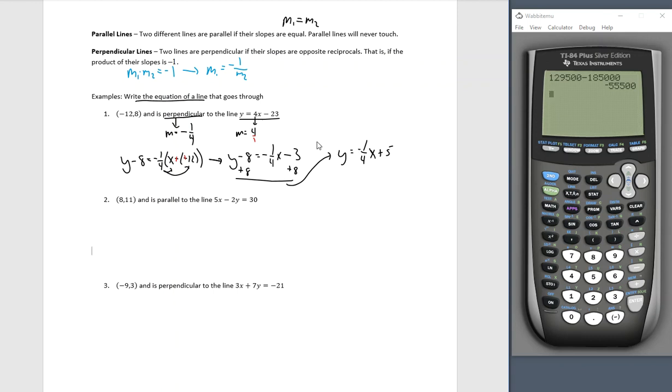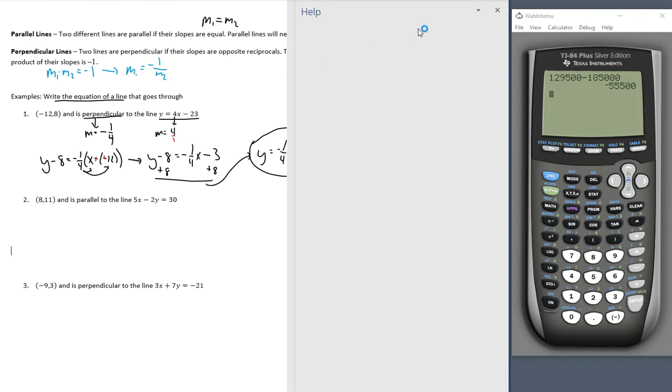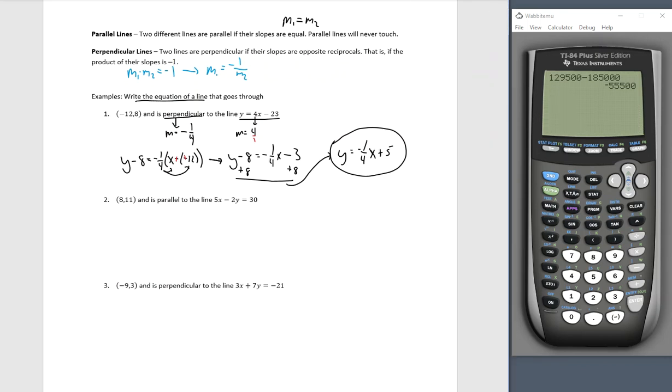Y minus 8 equals a negative 1 fourth x. Negative times a positive is negative 1 fourth of 12 is 3. Let's add 8 to both sides to finish this off. And I'll finish it over here where we have y equals a negative 1 fourth x plus 5. Slopes are perpendicular. And we've made it so it goes through this particular point. Notice this negative 23 had nothing to do with it. We don't need this negative 23 at all. This was not used at all.